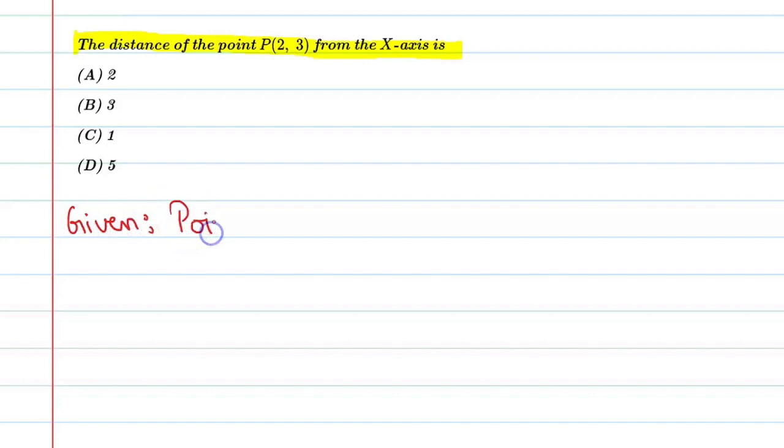Point P which is (2, 3). Where we have a coordinate given, and we need to find the distance from an axis, the basic rule...